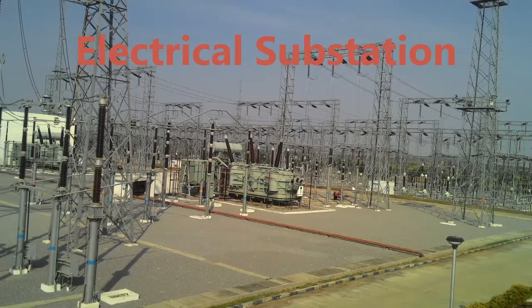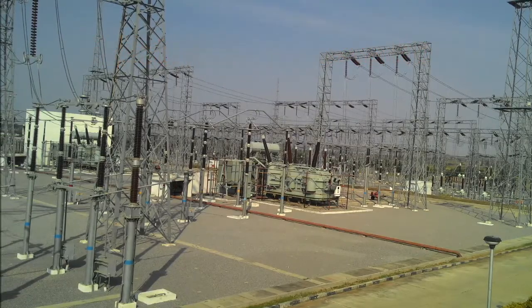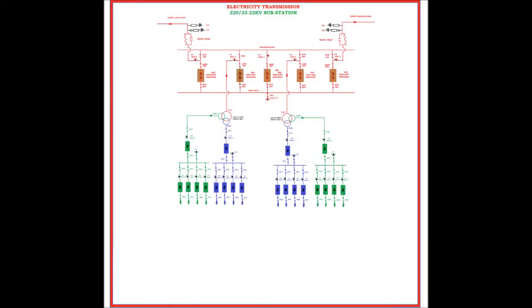Let's take an example of a 220kV substation. As shown in the diagram, there are two 220kV buses: one is the main bus and the other is the transfer bus. Usually in normal condition, the complete load is on the main bus.